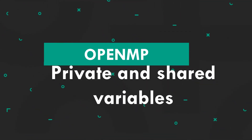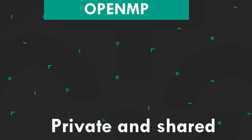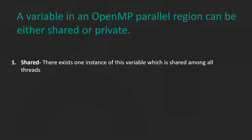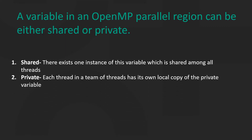Welcome to HPC Education. Today we'll be looking at private and shared variables. A variable in an OpenMP parallel region can either be shared or private. If a variable is shared, then there exists one instance of this variable which is shared among all threads.